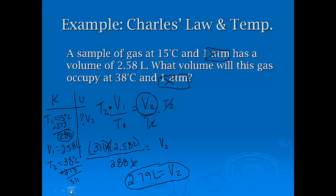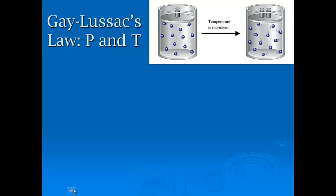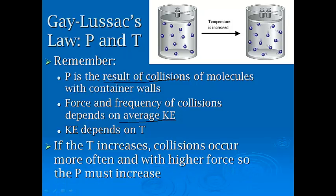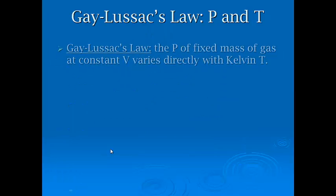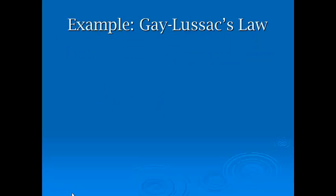All right, so that's Charles' Law. The next one that we have is Gay-Lussac's Law. This was discovered in 1802 by Joseph Gay-Lussac. He's studying the difference between pressure and temperature. If pressure is the result of collisions, the force and frequency of the collisions is also going to depend on kinetic energy. Kinetic energy is dependent on temperature. So if the temperature increases, collisions will occur more often with higher force, so the pressure must increase as well. So they are also going to be directly related, okay? So you've got pressure and temperature that are also directly related. The equation here is P1 over T1 is equal to P2 over T2.